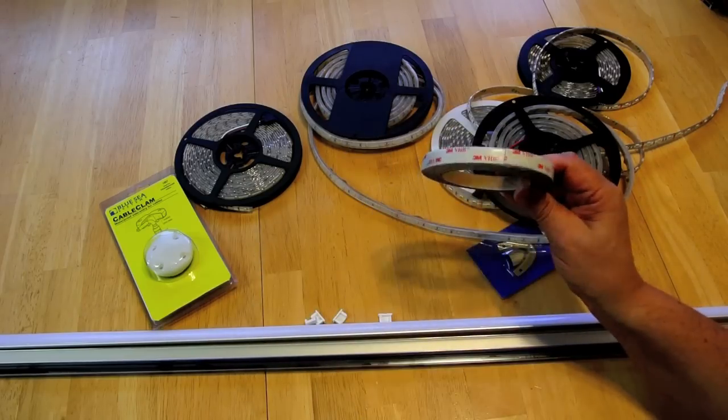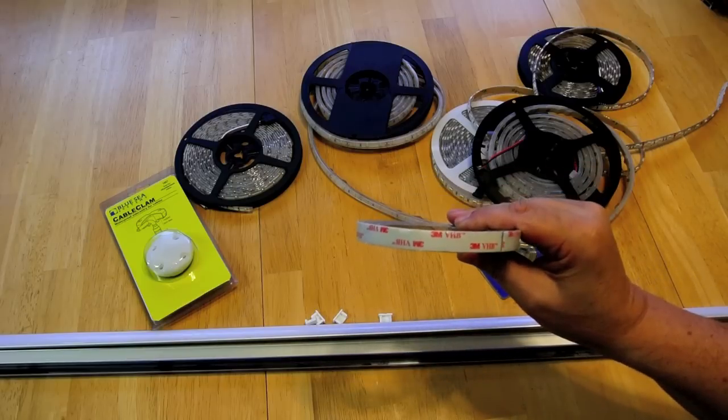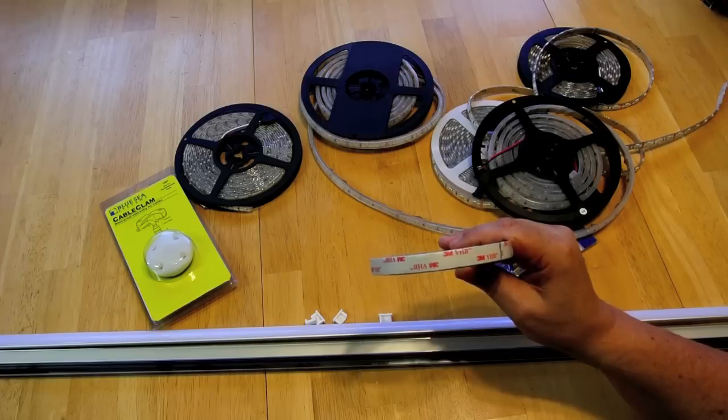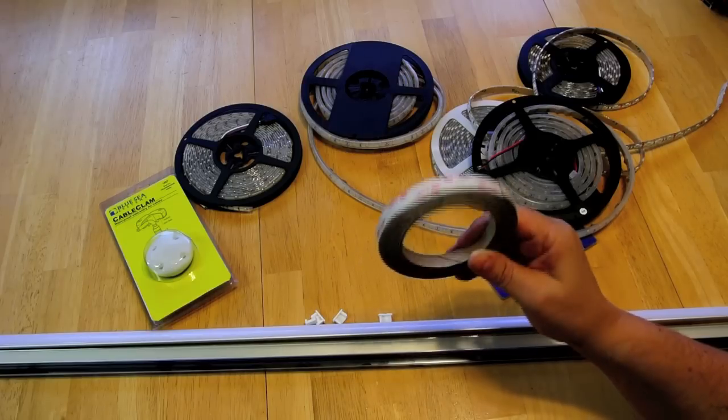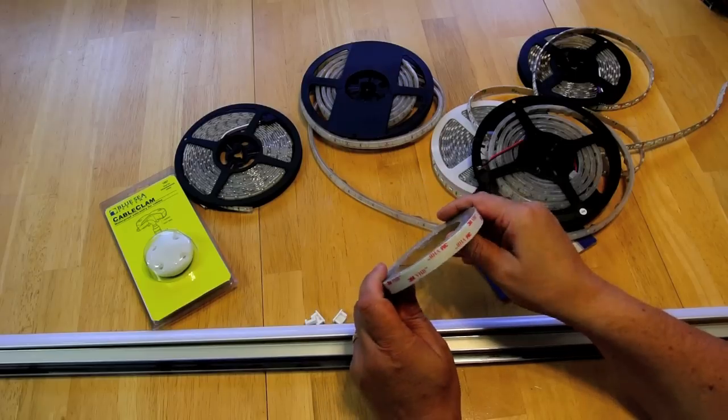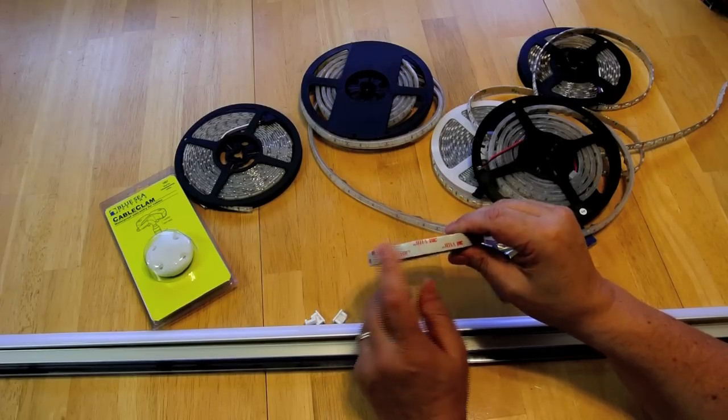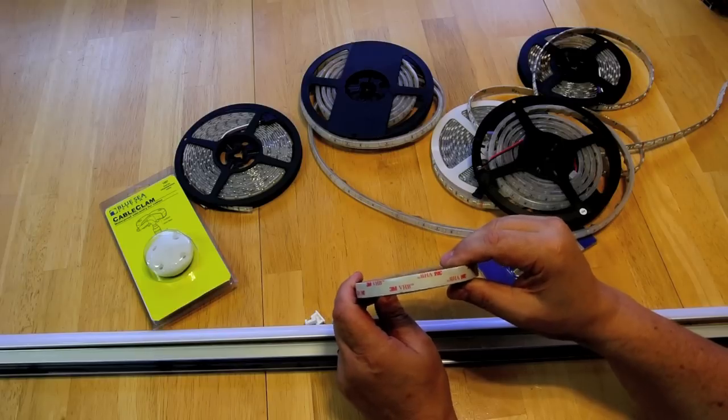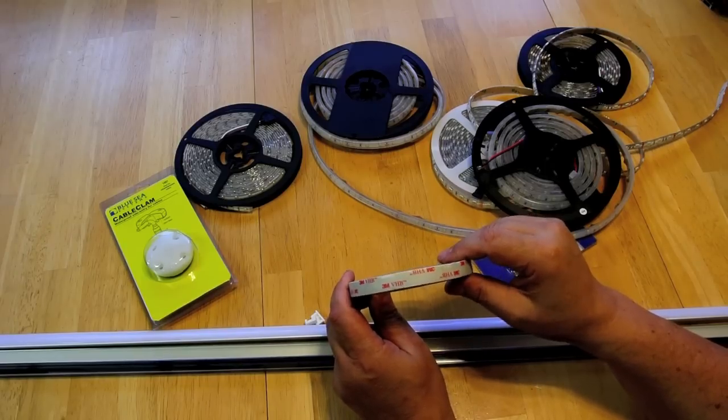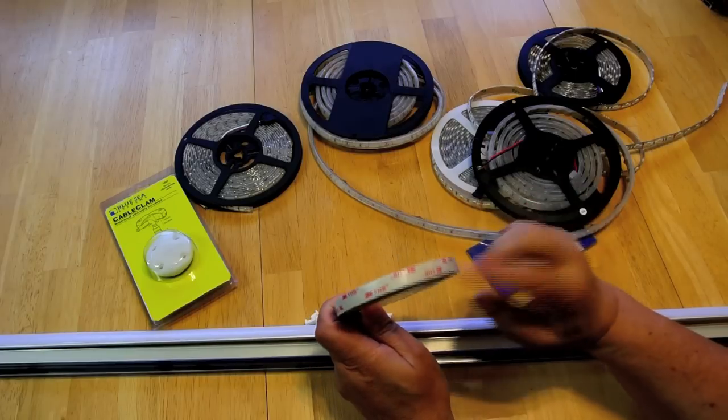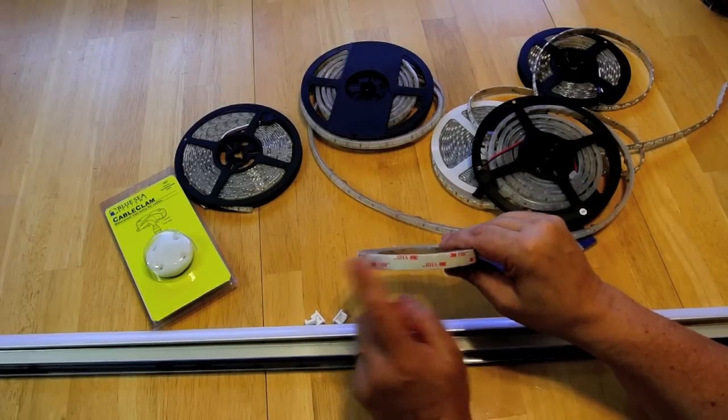The only thing that I would trust would be this type of tape here. This is a 3M brand VHB. VHB stands for very high bond. And in fact, I've read some articles about this stuff. And in hurricane areas such as Florida, they've experimented with using this on signposts, and they actually hold the signs on better in hurricane conditions than metal hardware. So this stuff is excellent.